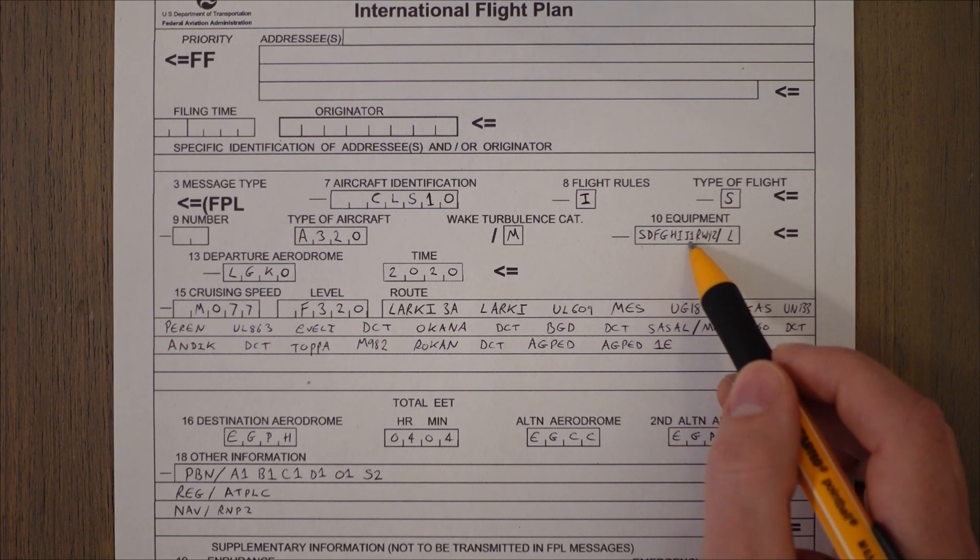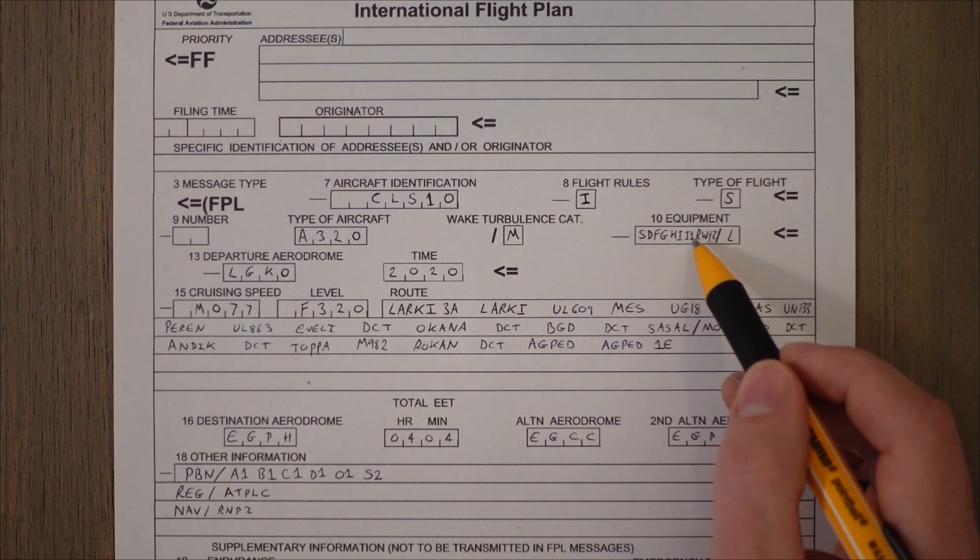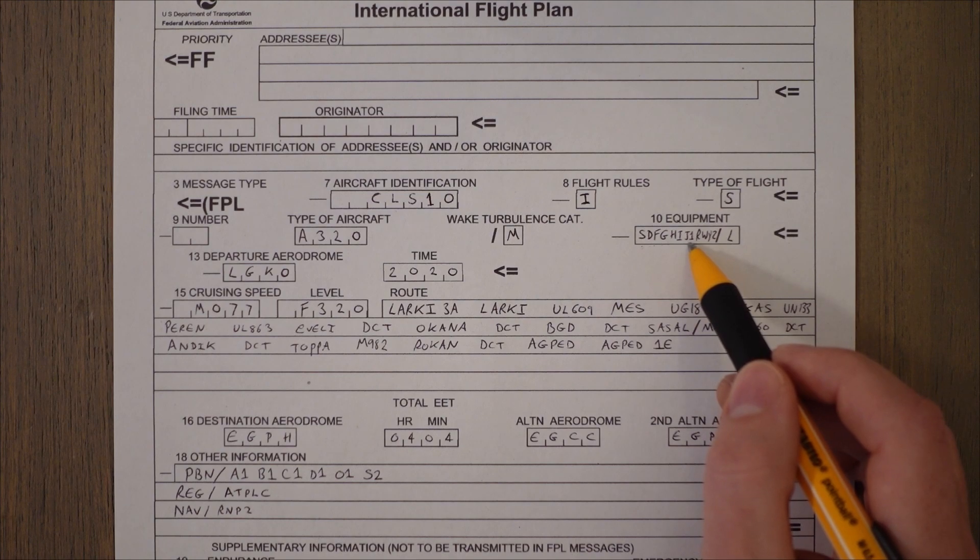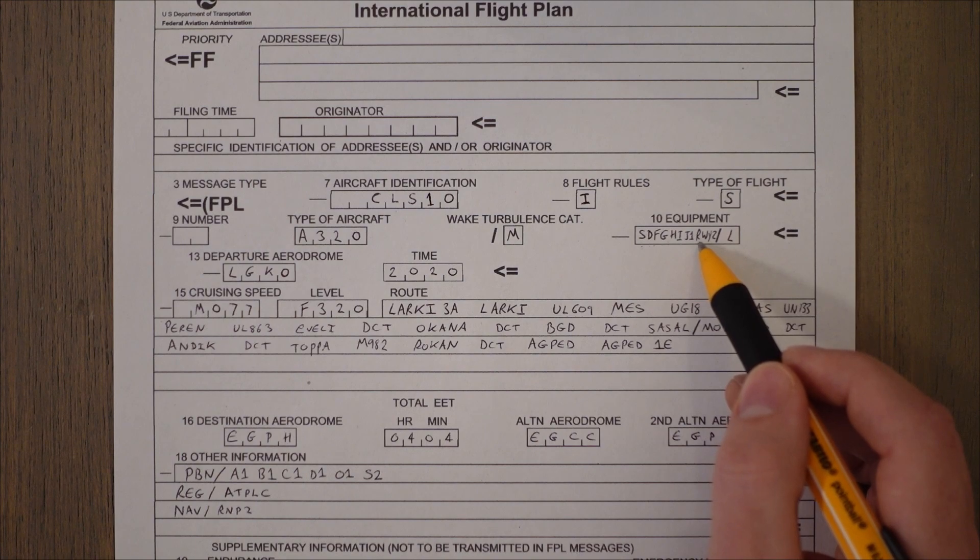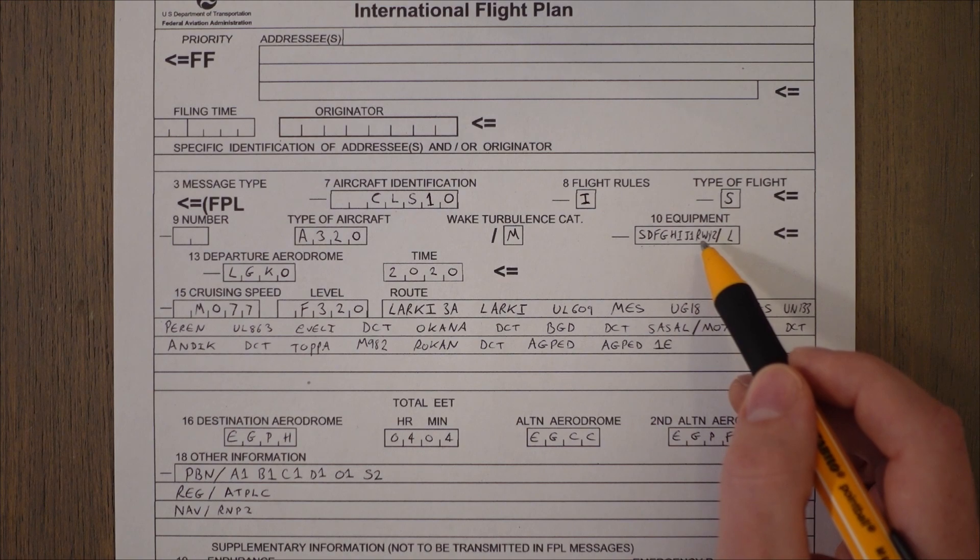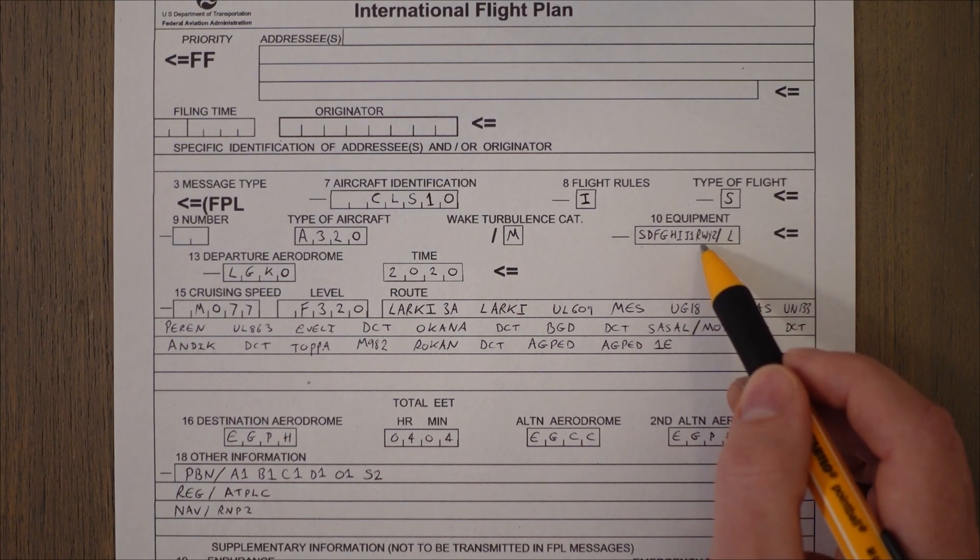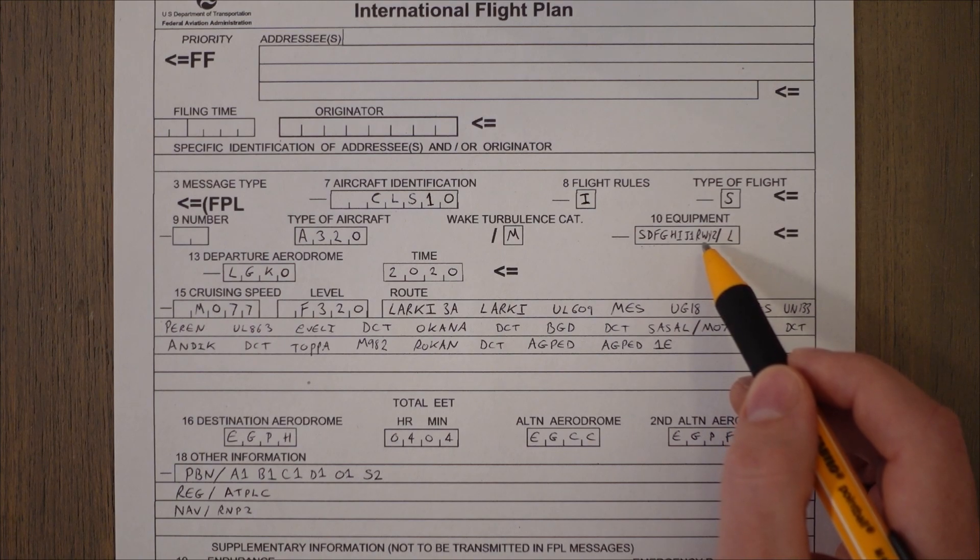J1 is something called CPDLC which is controller pilot data link communications which is essentially text messages between air traffic control and pilots. It's relatively new. R stands for PBN which is performance based navigation which is basically the ability to use the GNSS GPS signals and other signals from the ground accurately enough to fly within certain tolerances.